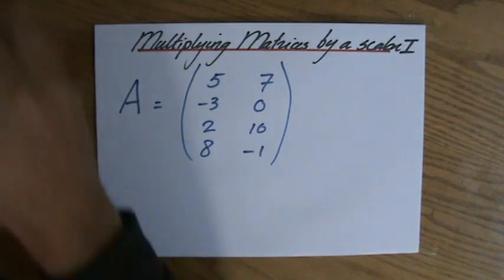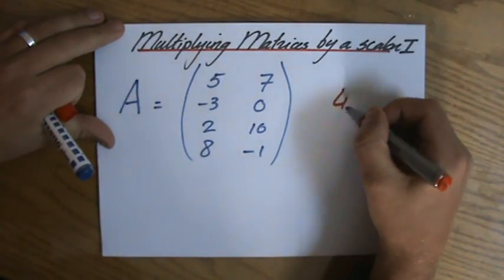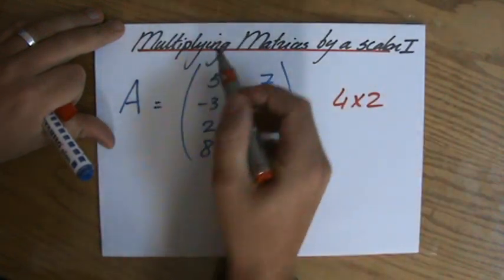and what is the order of this matrix? This is a 4 by 2 matrix, 4 rows 2 columns.